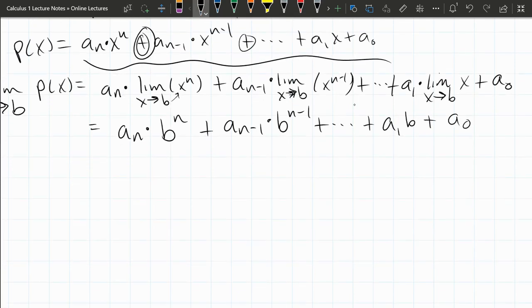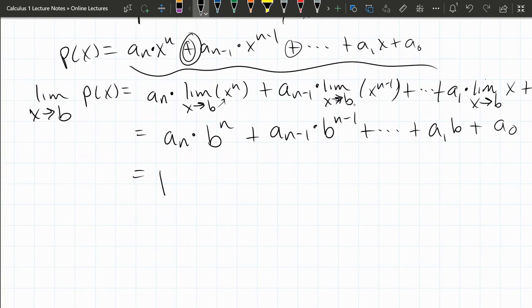And from here, what is this? This is p(b)—the same polynomial, just plugging in b for x. So we just showed the limit as x approaches b of p(x) equals p(b). Limit equals value.